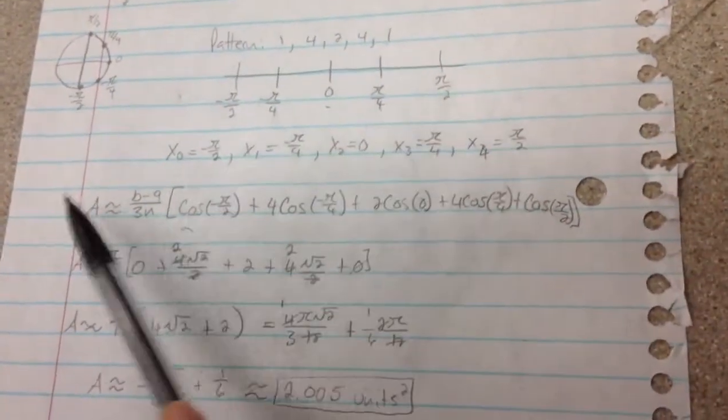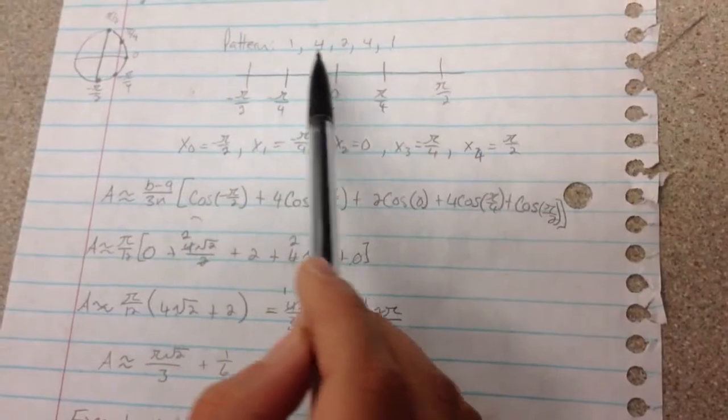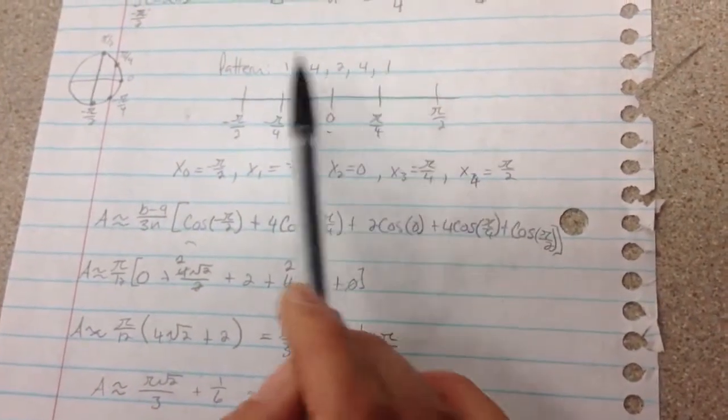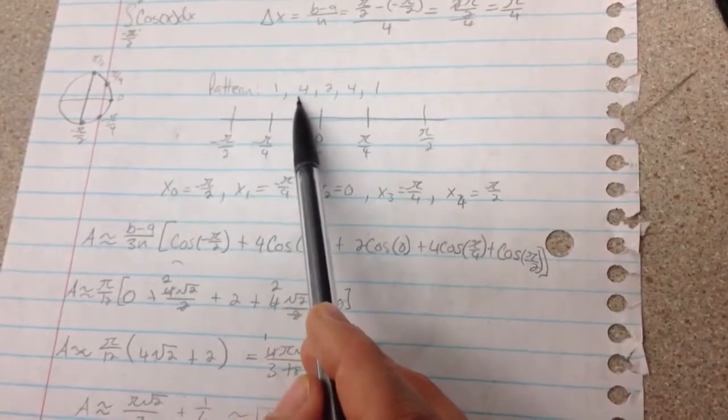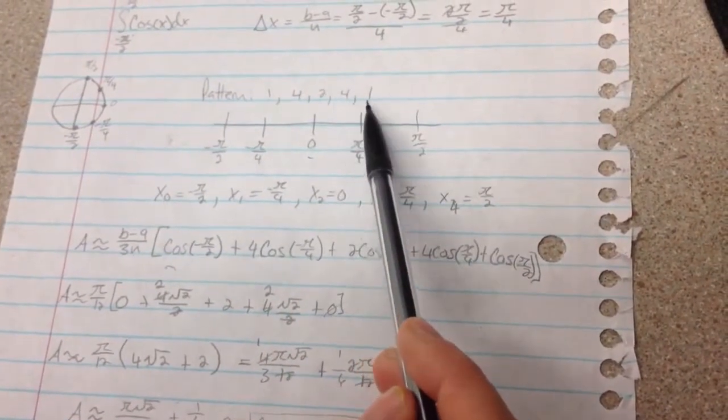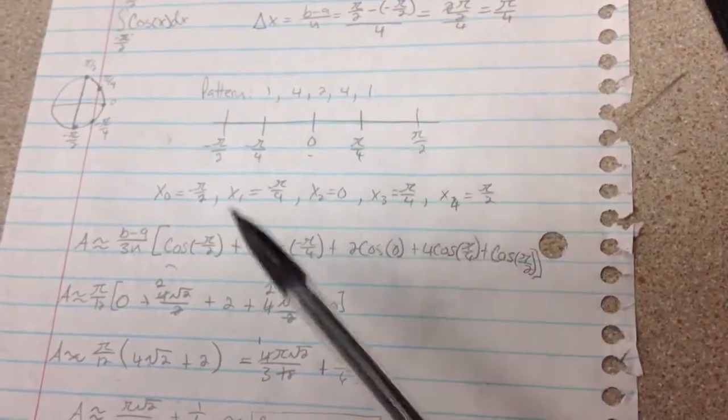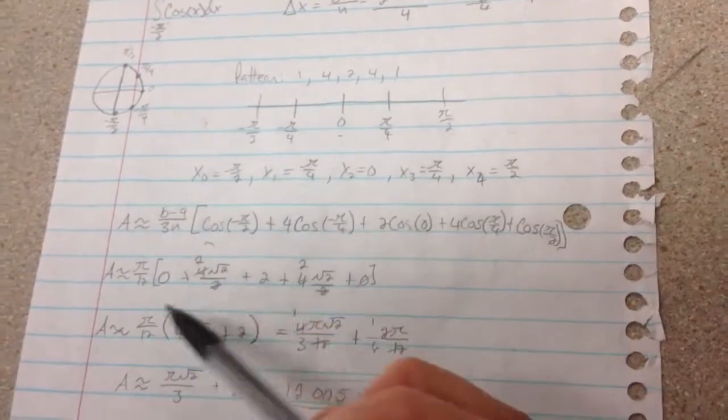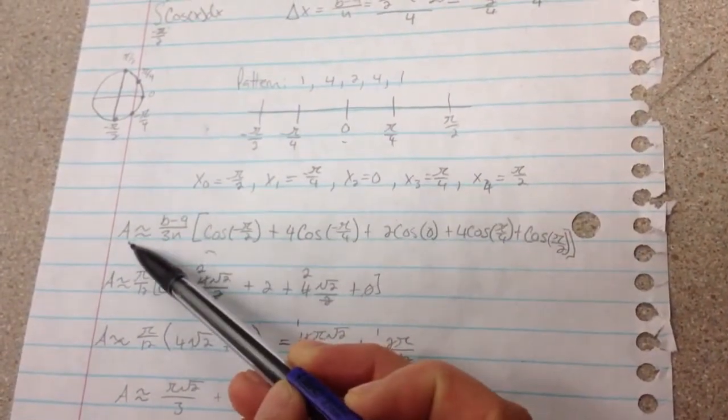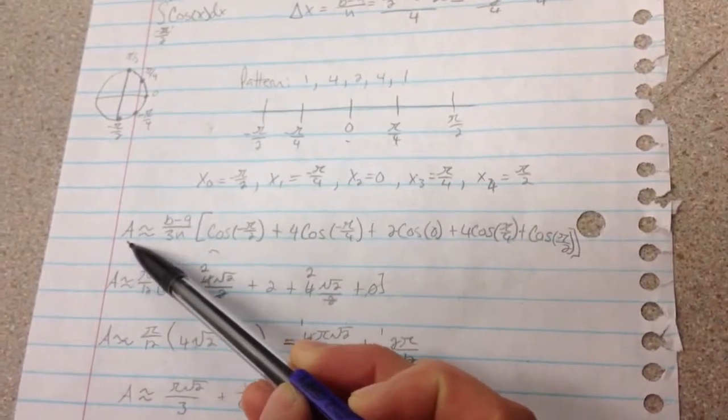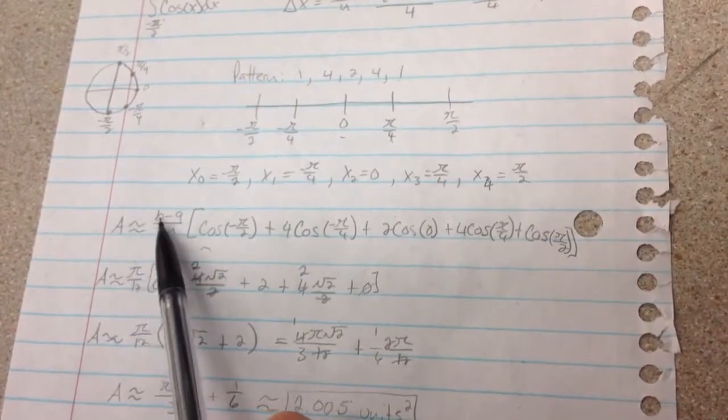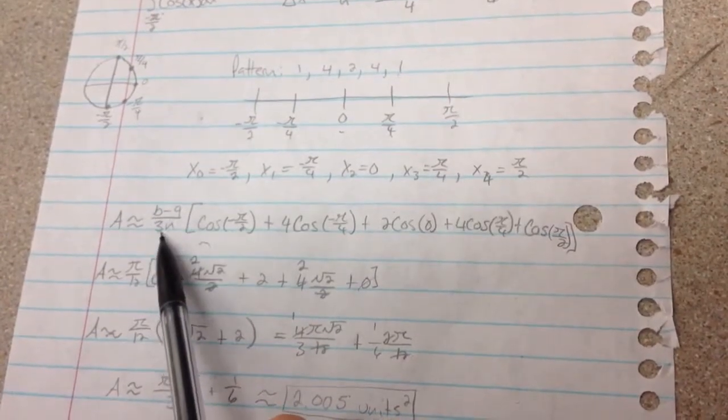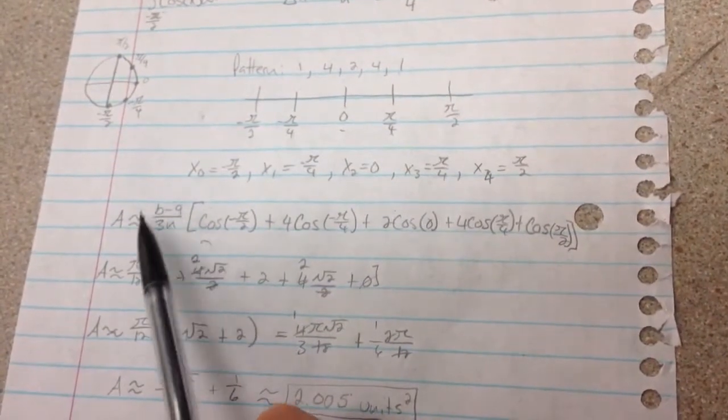Basically, if you have more coefficients than we do, this 2 and 4 is going to go back and forth. But you're always going to start with 1 and then 4, and you're always going to finish with 4 and then 1. So the next thing that you need to remember about Simpson's rule is that it's an approximation of the area. It's not exact. So for the equation, it's going to be area approximates to b minus a over 3n, which is also something else you just need to know.